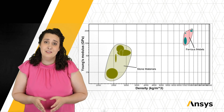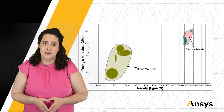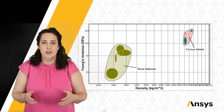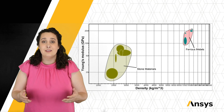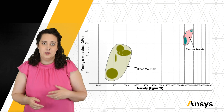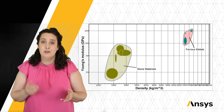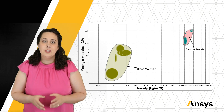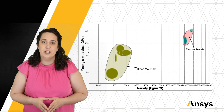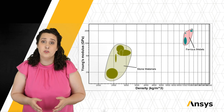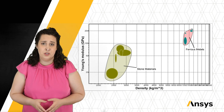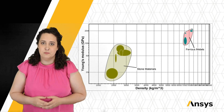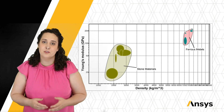I've plotted density on the x-axis, because often we're trying to design something that we want to be both stiff and light. We can see from this chart that our stone and stone-like materials have a much lower Young's modulus than our steels.